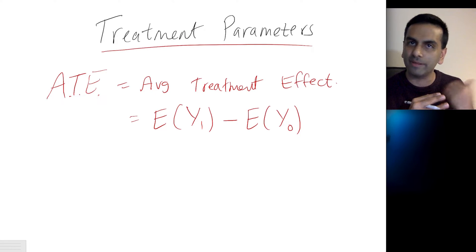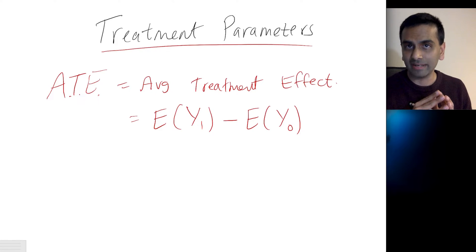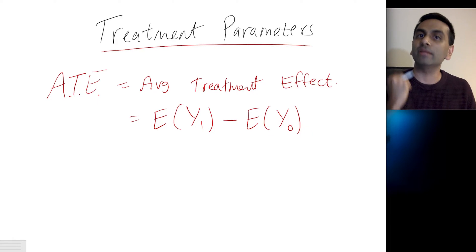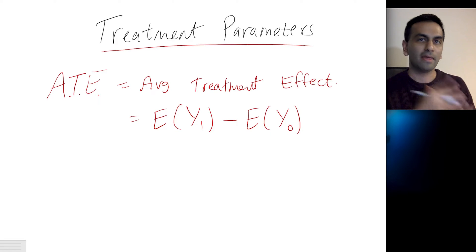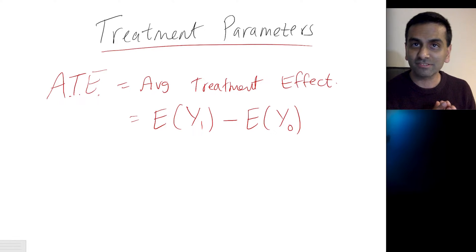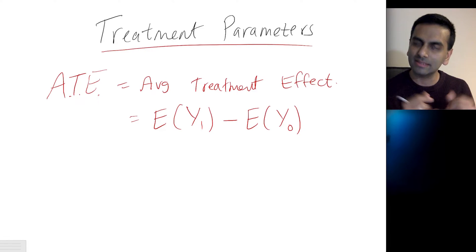It's more of just a theoretical thing of what you're trying to get. Also, what the ATE is not is just the difference between those who got the treatment and those who didn't. That difference is what we call the naive estimator, named as such because it's essentially not telling us anything, even though we'd like to think that it is.